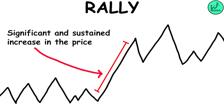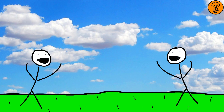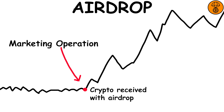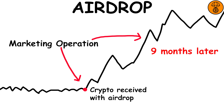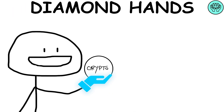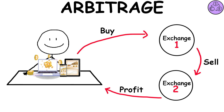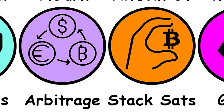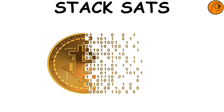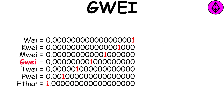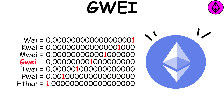Rally: it is a significant and sustained increase in the price of a specific cryptocurrency. Airdrop: crypto airdrops involve sending free cryptocurrencies from crypto projects to the community — it's a marketing operation, but also an opportunity. Diamond hands: it means holding a cryptocurrency despite its volatility or associated risks. Arbitrage: buying a cryptocurrency on one exchange and selling it on another exchange for a higher price. Stack sats: short for stacking satoshis, referring to accumulating smaller amounts of Bitcoin. Gwei: it's a denomination of the cryptocurrency Ethereum, the digital coin used in the Ethereum blockchain.